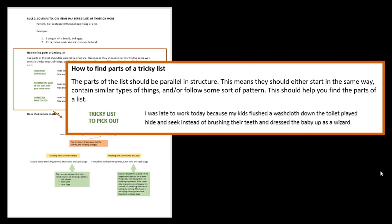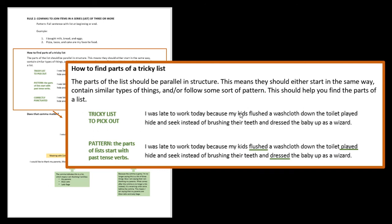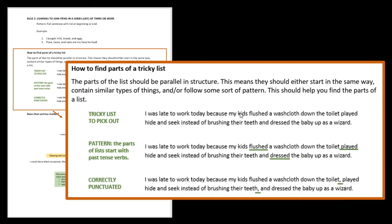That's a long sentence. So where do we start picking things out to figure out the pieces of the list? Well, honestly, the easiest way to do this is to look for the and, and then look at the last part of the list, dressed the baby up as a wizard. Okay. It starts with an -ed word and then what they dressed and who they dressed up. Okay. Let's see if we can back up and find something similar. Played hide and seek instead of brushing their teeth. Wait a minute. So that starts with an -ed verb. Maybe that's our list. I'll back up. Oh, we have another -ed verb. That's probably our pattern. So I identify those places. Yeah. The pattern is that the list starts with past tense verbs. And so once you identify that, you put commas between the parts of the list.